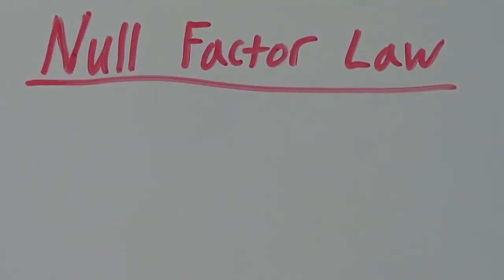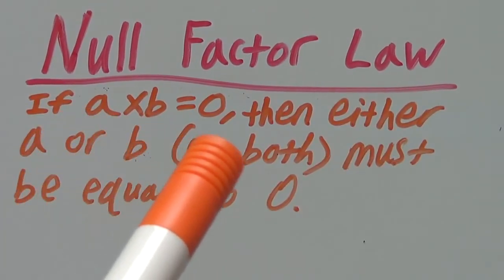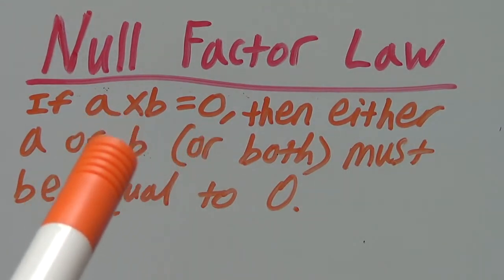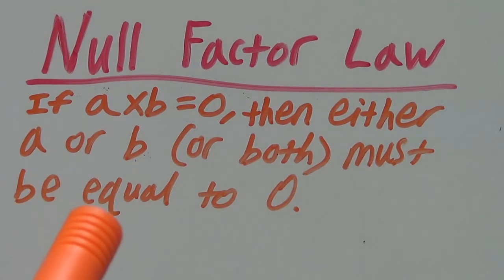Hello and welcome. In this video, we are going to look at the Null Factor Law. The Null Factor Law states that if a times b equals zero, where a and b are random numbers, then either a or b or both must be equal to zero.